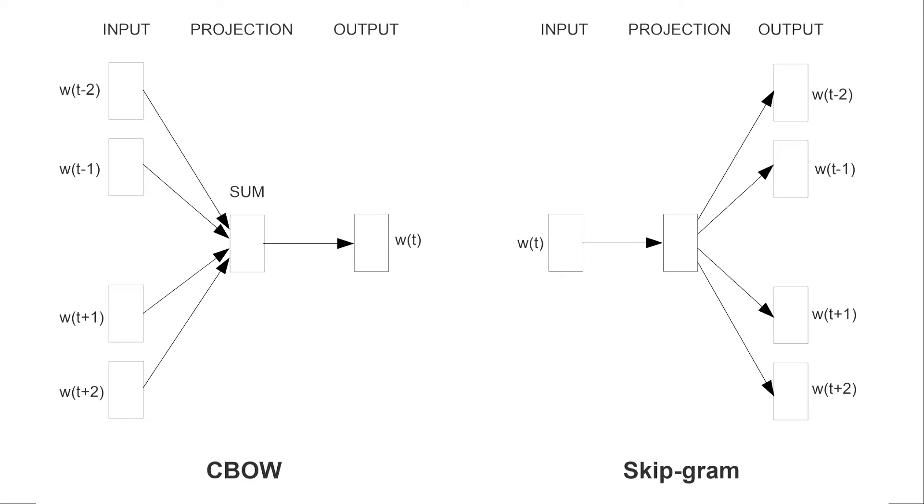And for the case of CBOW, predict the target word given the source context word. So once again, autoencoder is a self-supervised learning problem and word2vec is an unsupervised learning problem.